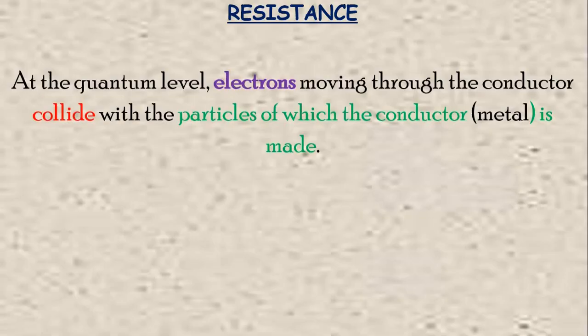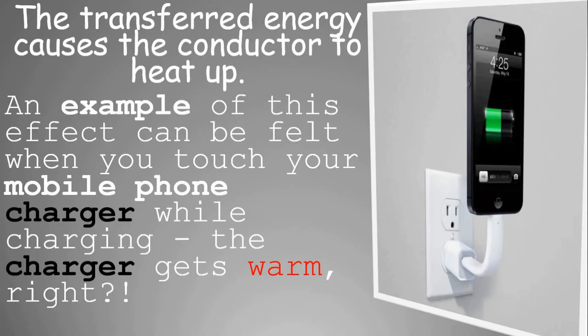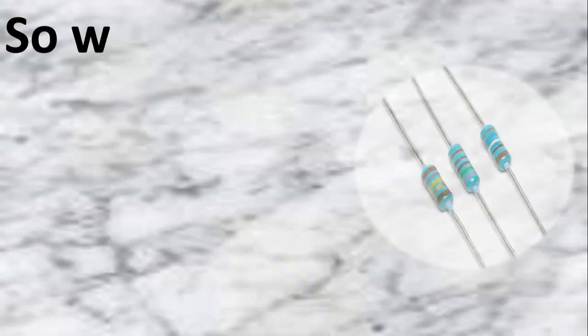At the quantum level, electrons moving through the conductor collide with the particles of which the conductor is made. When they collide, they transfer kinetic energy. The electrons therefore lose kinetic energy and slow down, thus leading to resistance. This transferred energy causes the conductor to heat up. An example of this effect can be felt when you touch your mobile phone charger when charging.